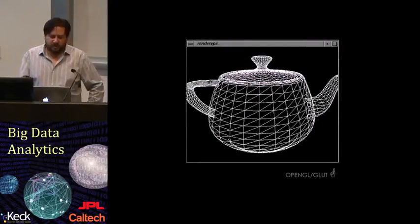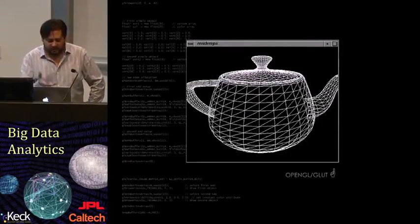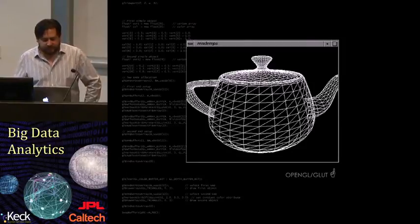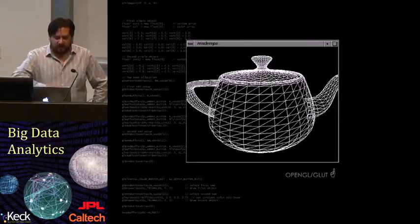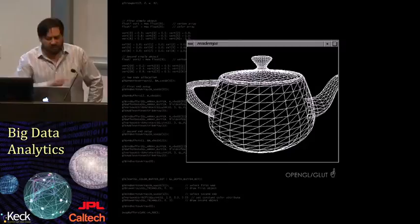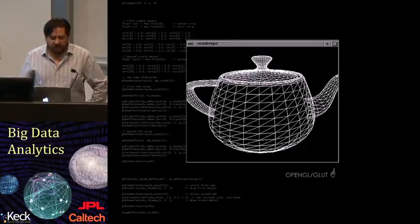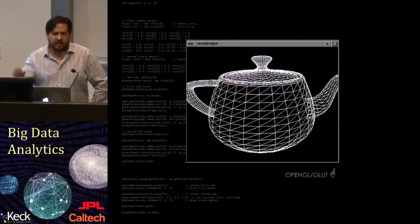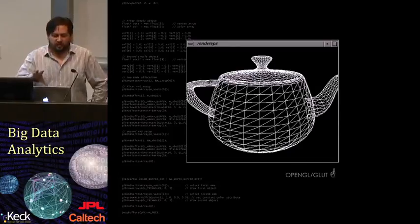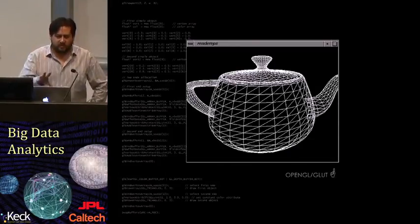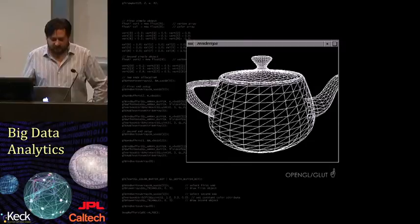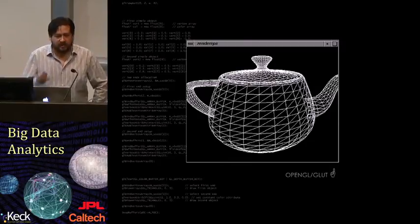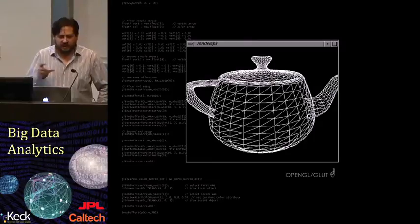If you wanted to program something that shows the Utah teapot, your program, if you did it in OpenGL, would look something like the code we're looking at right now in the background, where you have to set up your environment, set up your vertices, and tell the graphics card how to manage these vertices to render them as triangles. However, internally, this is exactly the way the graphics card wants to listen to it, and it can do efficient things like make lists out of this so it can render quite fast.